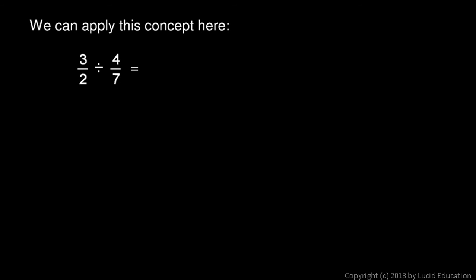So let's see how this concept applies in this example. 3 halves divided by 4 sevenths, let's go ahead and write 3 halves times 7 fourths. And that's it, it's that easy. Instead of dividing by a fraction, we multiply by the reciprocal of that fraction. And then 3 times 7 is 21, and 2 times 4 is 8. So that's our answer.